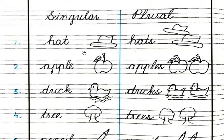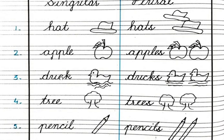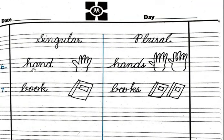Once again, let me revise for you. Hat — hats. Apple — apples. Duck — ducks. Tree — trees. Pencil — pencils. Hand — hands. Book — books. Like this, you have to do your work in your notebook. Thank you for watching.